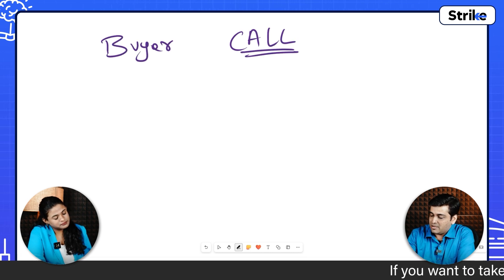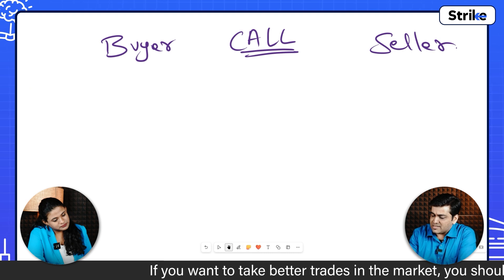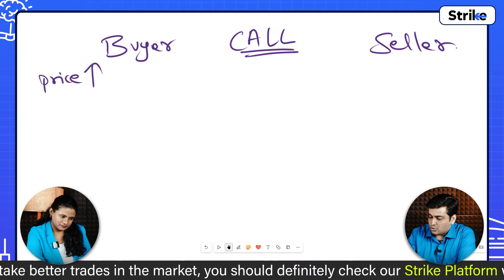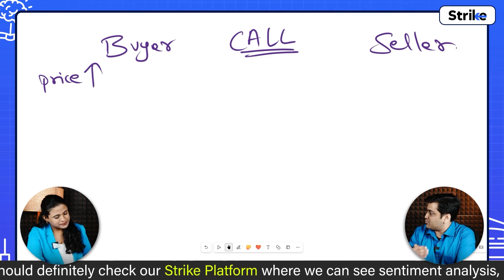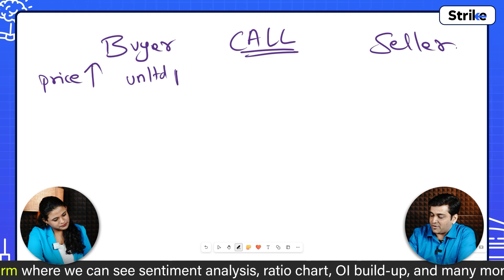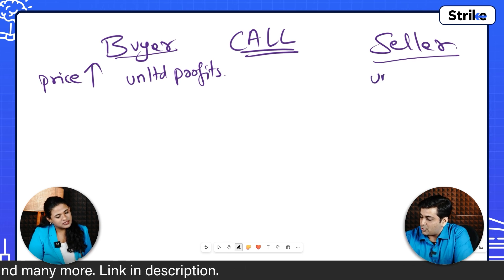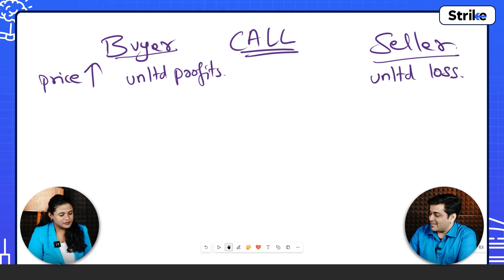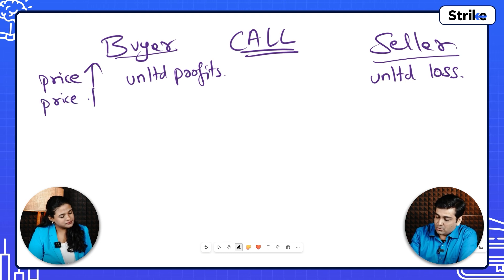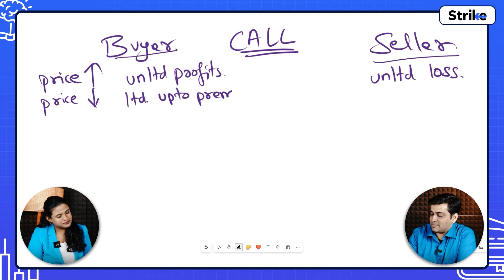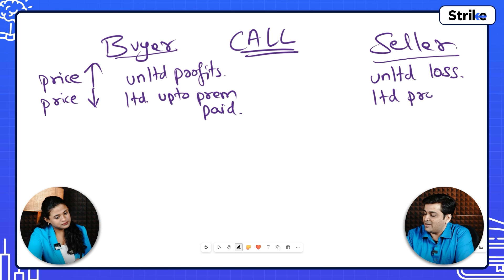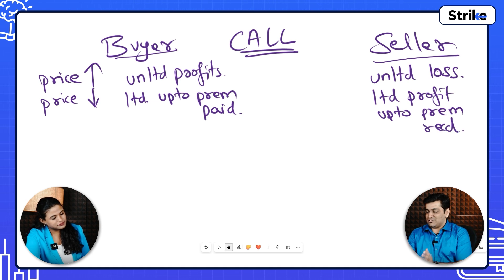So to summarize: you are the buyer and the dealer is the seller. If the underlying asset price goes up, your profits keep increasing — potentially unlimited profits for the call option buyer. And whatever your profits are, it is an equivalent loss for the seller — so the seller faces potentially unlimited losses. If the price goes down, your loss is limited to the premium paid, and the seller's profit is limited to the premium received.